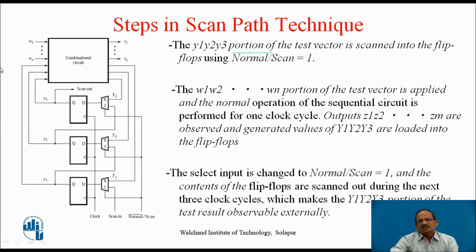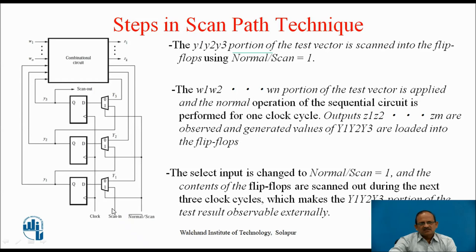The external inputs W1 to Wn can be applied directly. But for applying the present state variables, the y1, y2, y3 portion of this test vector is scanned into the flip-flops using Normal/Scan equal to 1, and it is run for 3 clock cycles so that this input will be applied to y1, y2, y3.